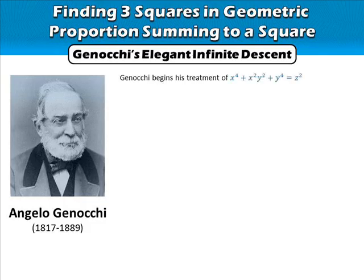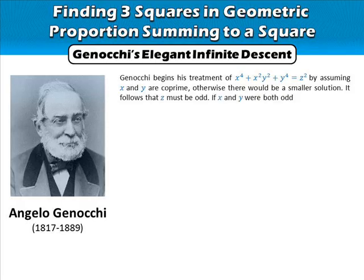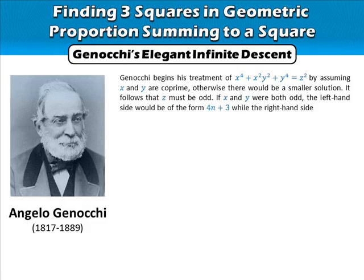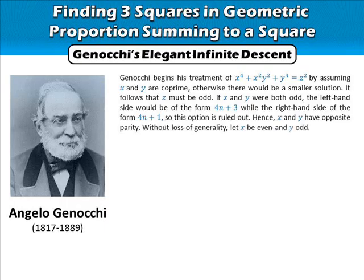Genocchi began his treatment of the general equation by assuming x and y are co-prime — otherwise there would be a smaller solution. It follows that z must be odd. If x and y were both odd, the left-hand side would be of the form 4n+3, while the right-hand side of the form 4n+1, so this option is ruled out. Hence, x and y have opposite parity.